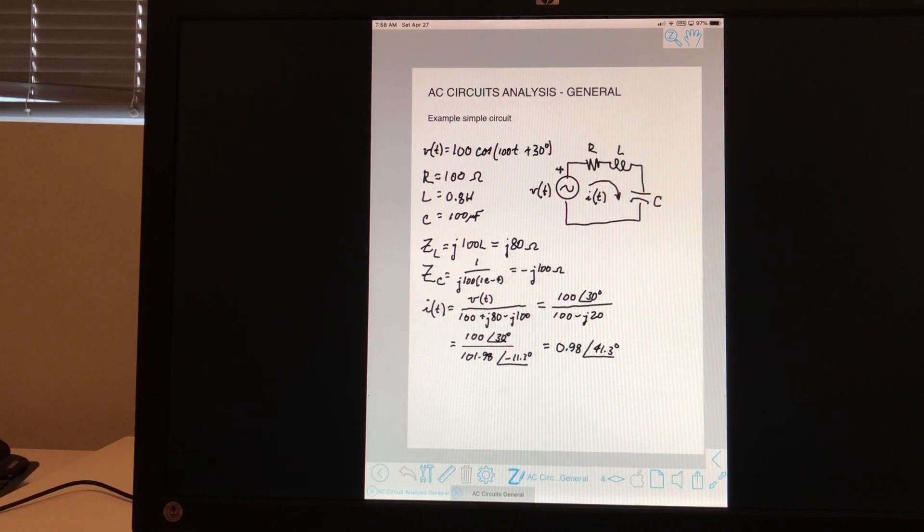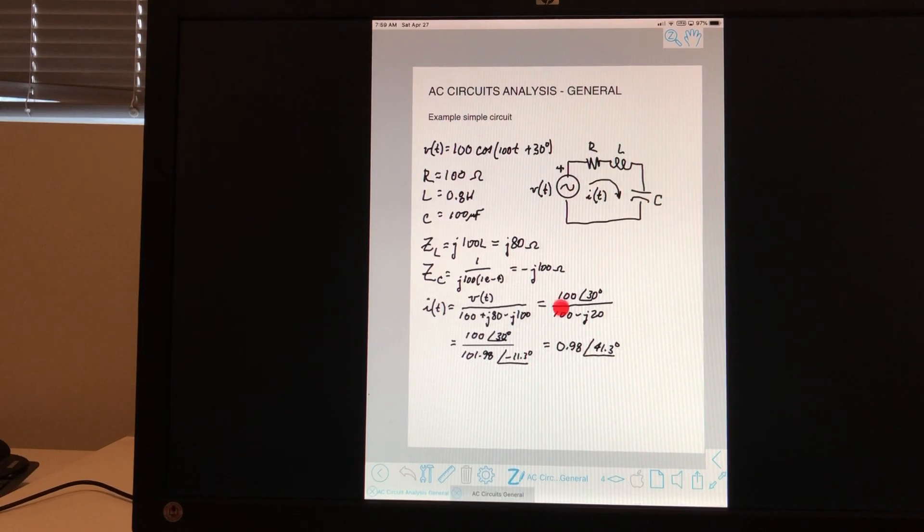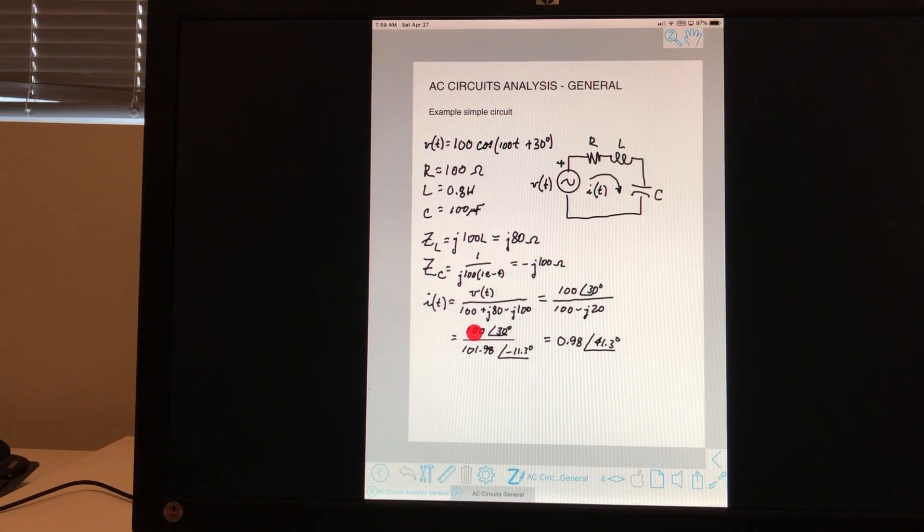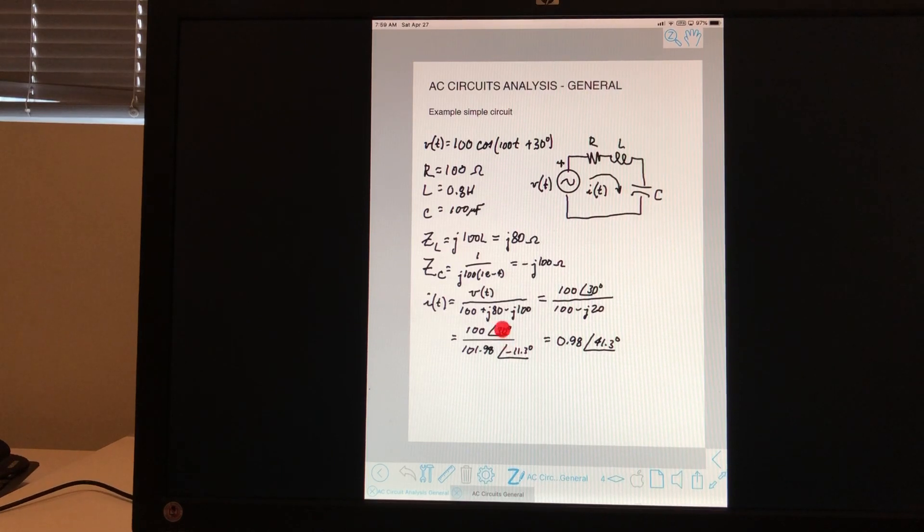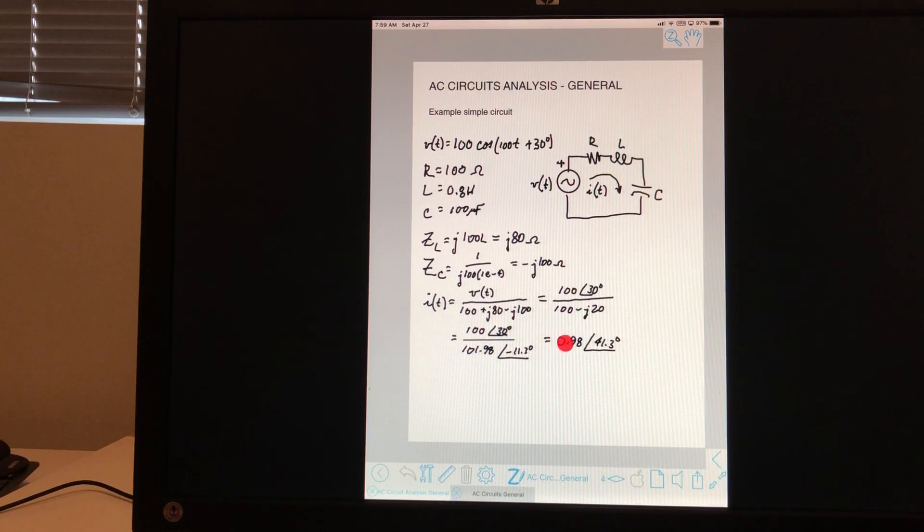So one way that you can do it is to convert the rectangular to polar. And then when you do a division, if you remember this, how do you do a division in complex arithmetic? You divide the magnitudes and you subtract the angles. And so when you do that, you get 0.98 at an angle of 41.3.